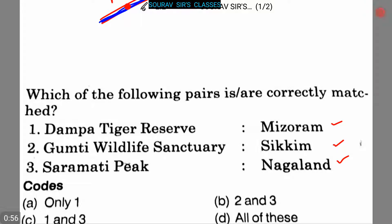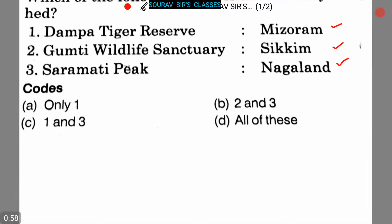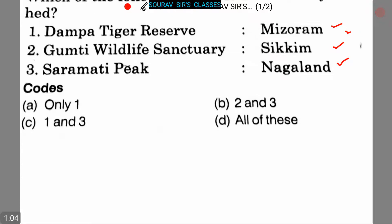We have to choose one of the four options given. Dampa Tiger Reserve is located in Mizoram. It is the largest wildlife sanctuary in Mizoram and was declared a tiger reserve in 1994.